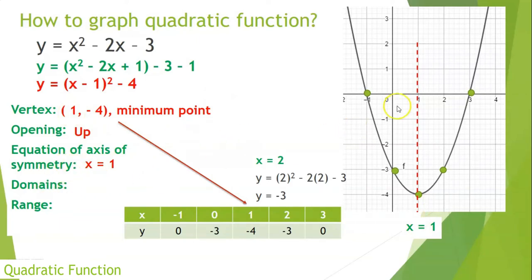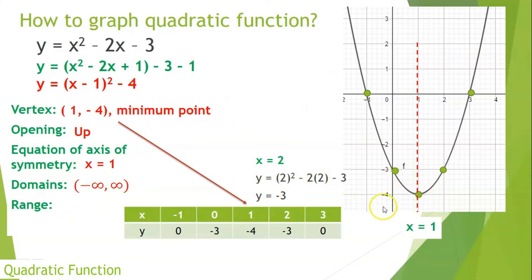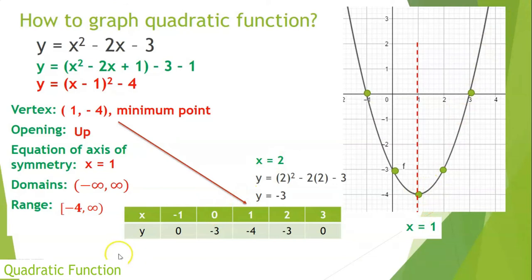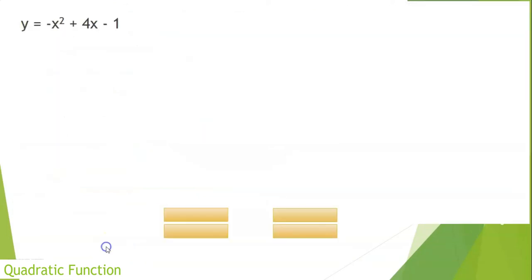The domain is all values of x, which extends infinitely to the right and left — so it is all real numbers (negative infinity to positive infinity). The range is the values of y from the lowest to the highest possible value. Since the lowest is at y = −4 and the graph extends infinitely upward, the range is [−4, +∞).